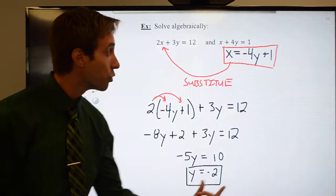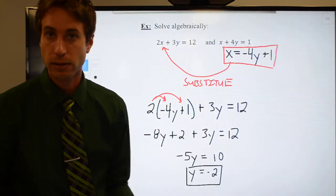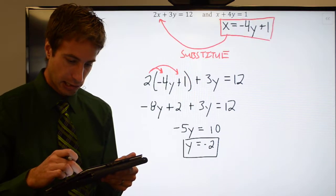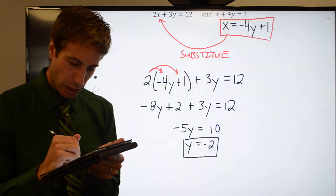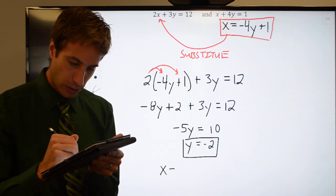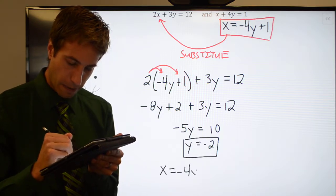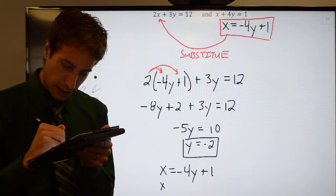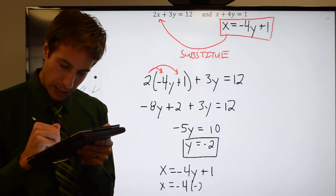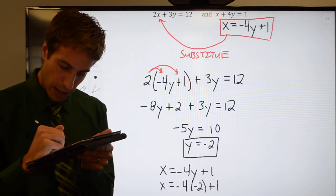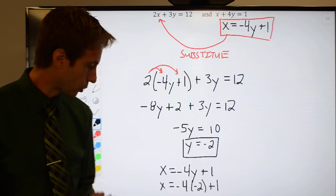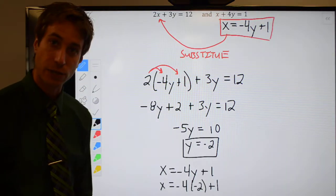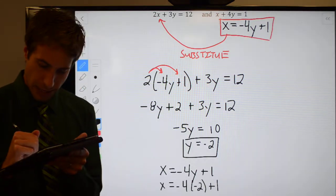Go ahead and plug the value of y in for y and evaluate the expression for x. So let me go ahead and slide this up a little bit so I've got some space, and here's what we're going to do. We're going to go ahead and do x is equal to negative 4y plus 1. But I know what y is. Y is negative 2. So x is equal to negative 4 times negative 2 plus 1. And of course we get x is equal to, hopefully you can see that. Negative 4 times negative 2, positive 8. 8 plus 1 is going to be 9.